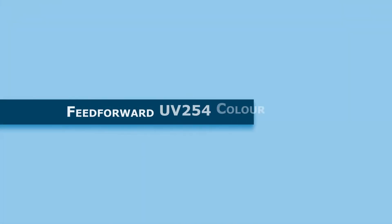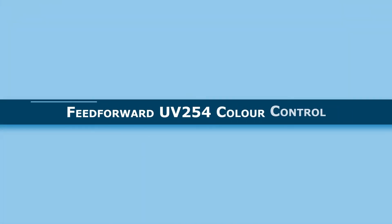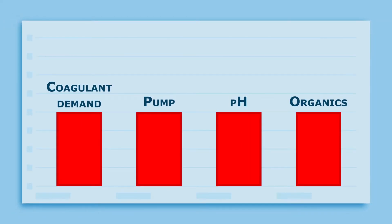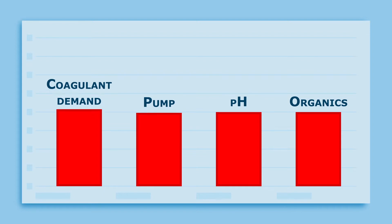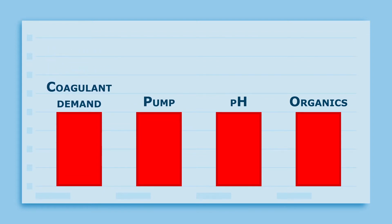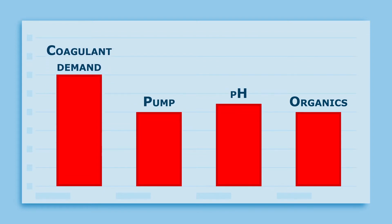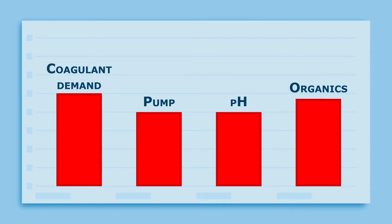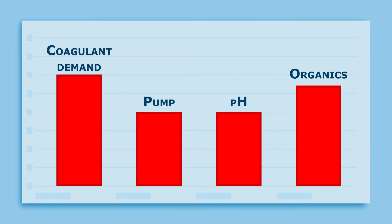Feed forward UV-254 or colour control also frequently leads to incorrect dosing because of coagulant, pump and pH variability, as well as changes over time in the UV-254 or colour to TOC correlation due to changing organics.